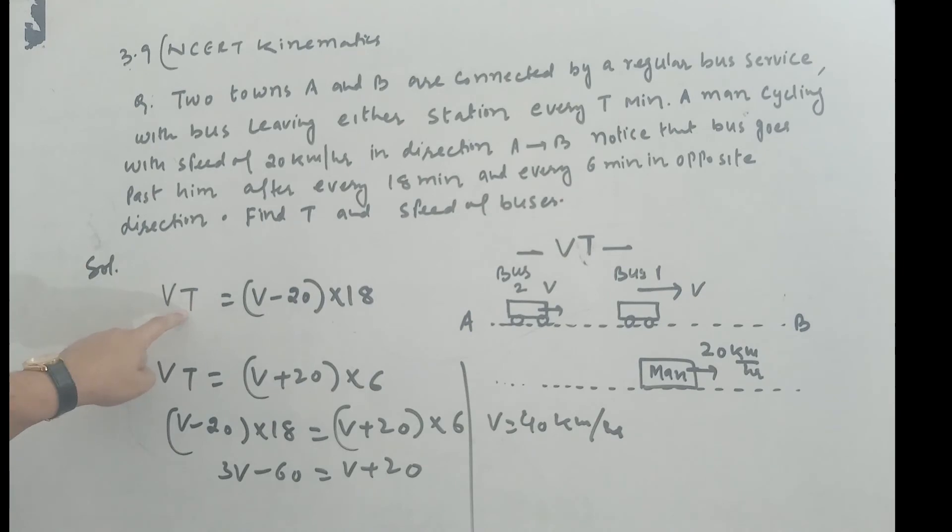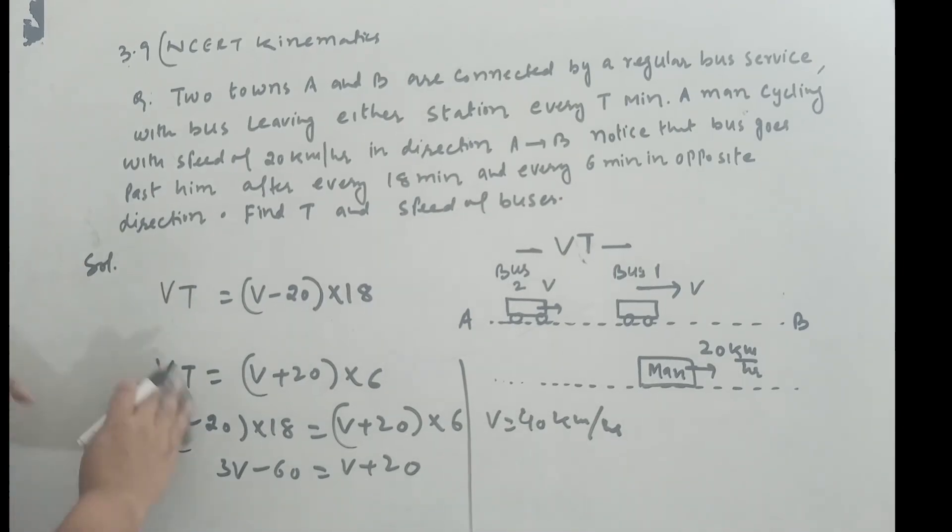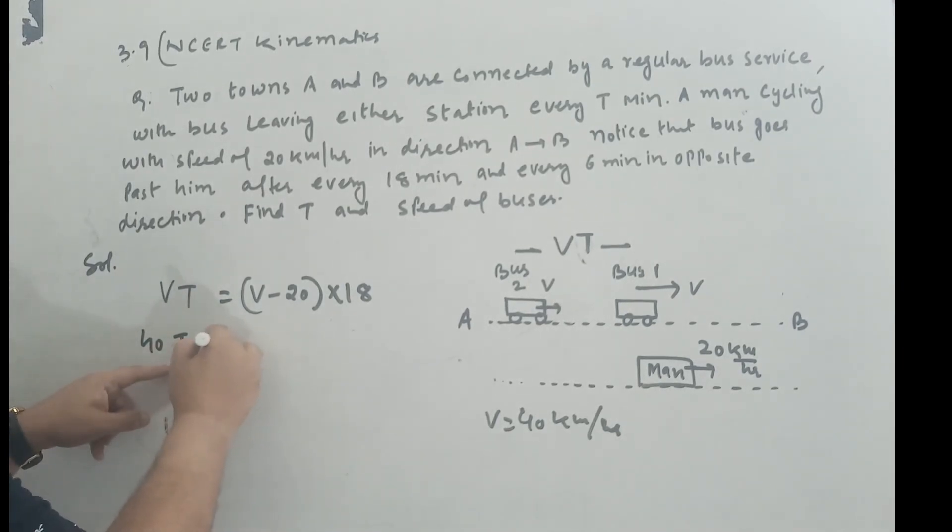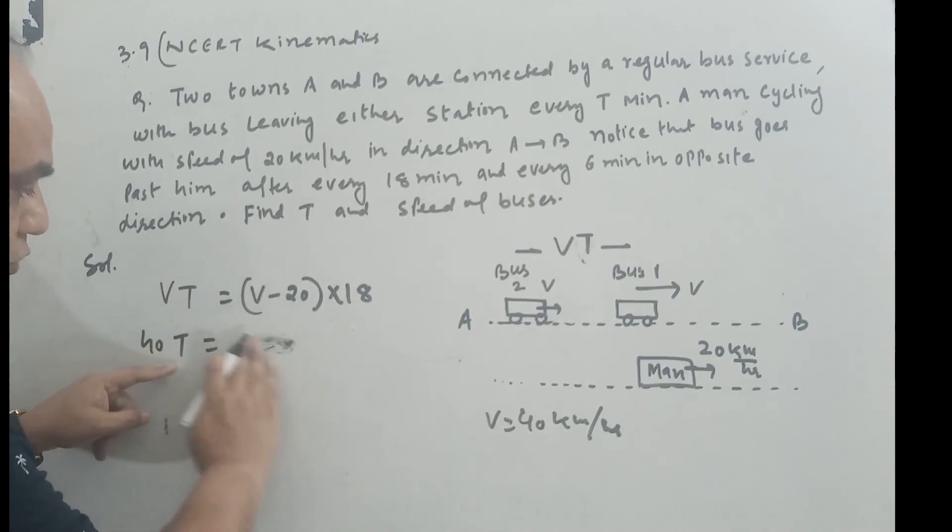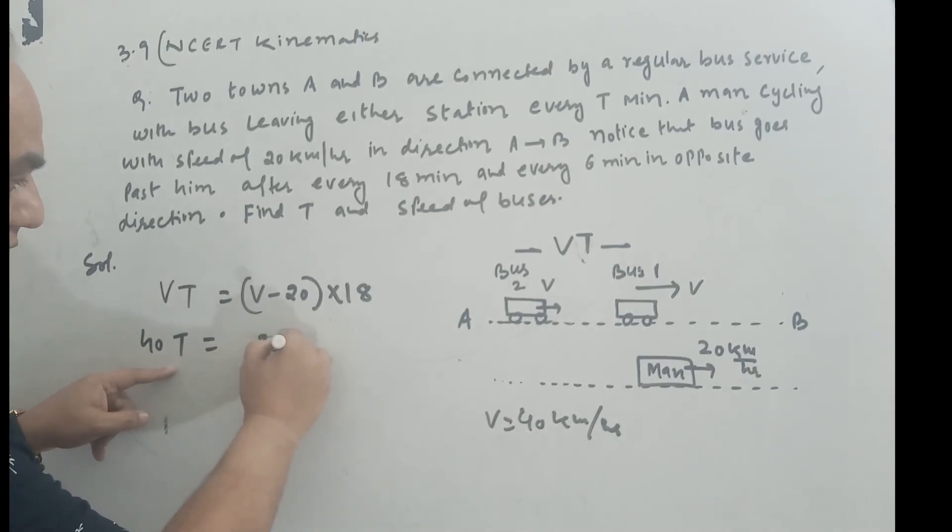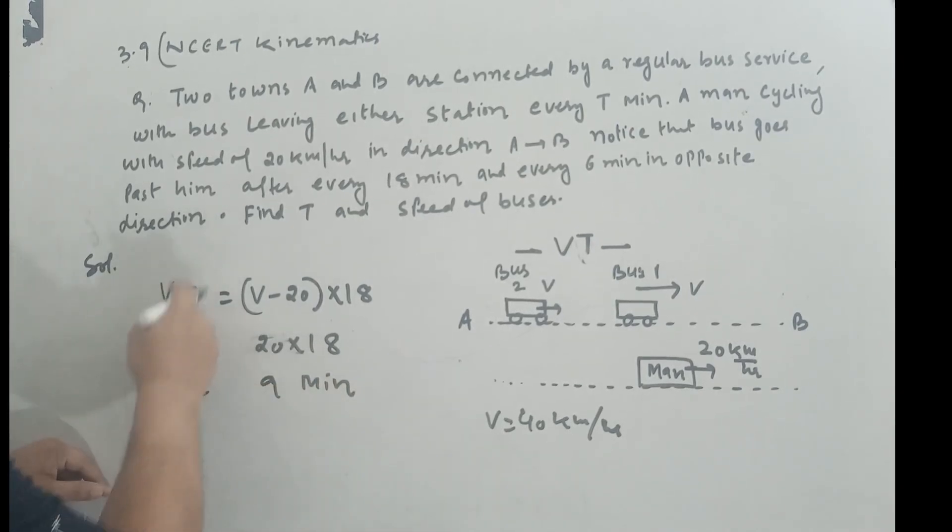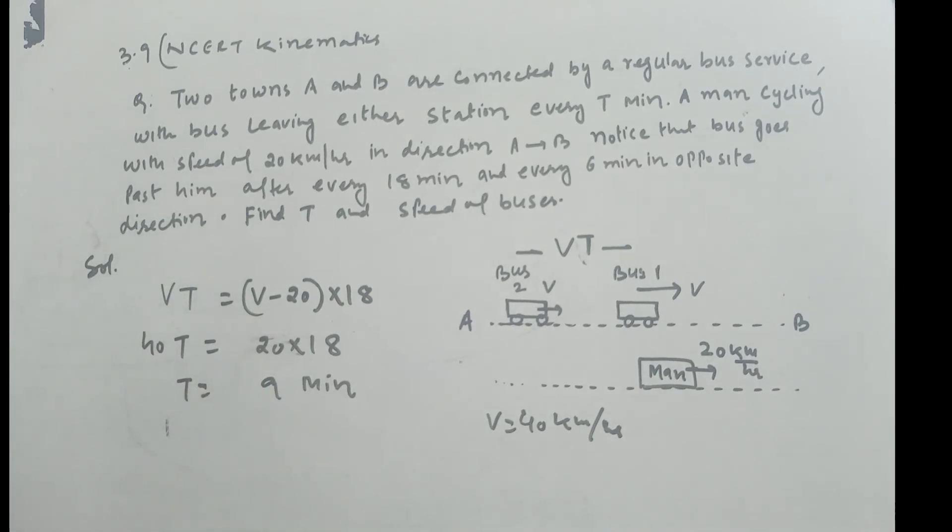V is 40, put it in this equation. You can put in any equation. So this is 40 into T. This is in km per hour, right? T equals 40 minus 20, that's 20, into 18. So T equals 20 by 40, which gives 9 minutes as the answer. If I convert to hours, the same factor applies on both sides, so this is the answer. I hope this problem is clear to you. Good problem. Try it yourself. Thank you very much.